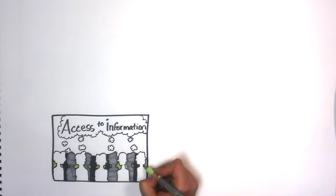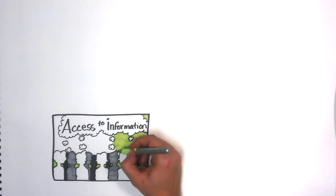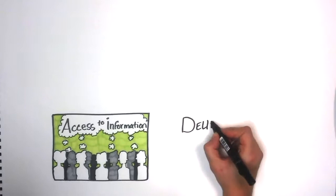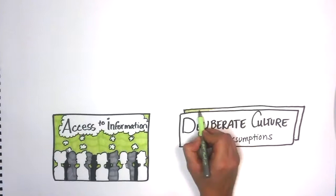At the very base of person-centered systems, you will find a deliberate culture. This is a shared, deliberate set of assumptions, shared by a group of people. In the context of this discussion, a deliberate culture would be exemplified by professionals in an organization understanding that all people in need of long-term services and supports have the right to access information concerning their options in care and supports.